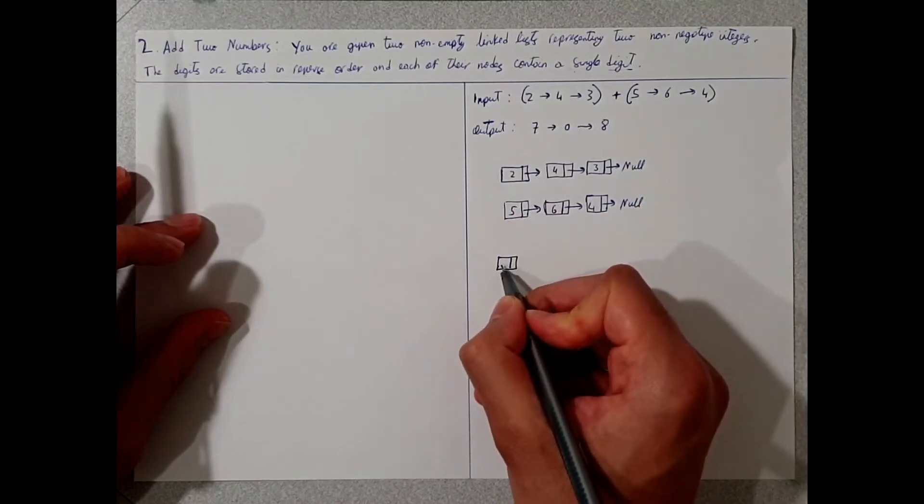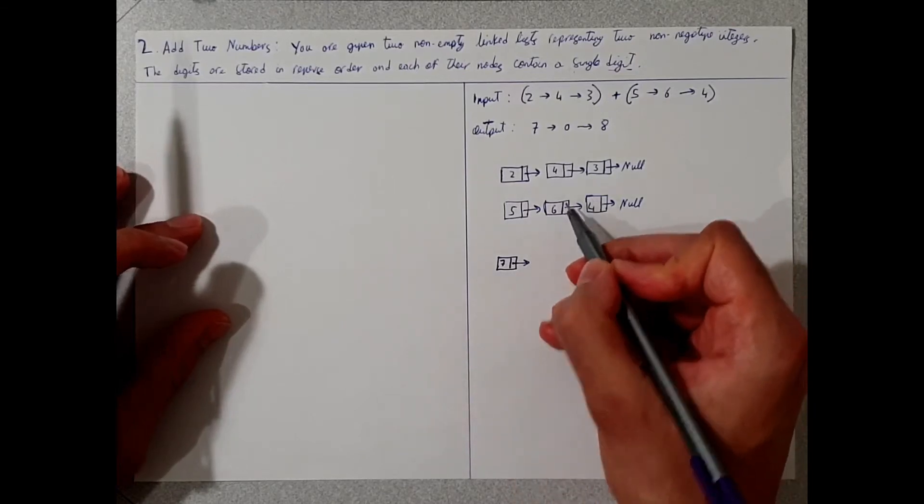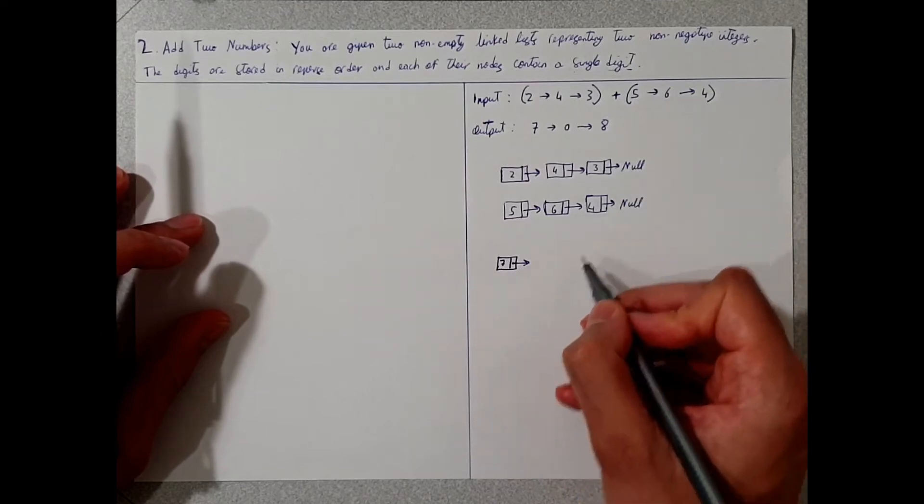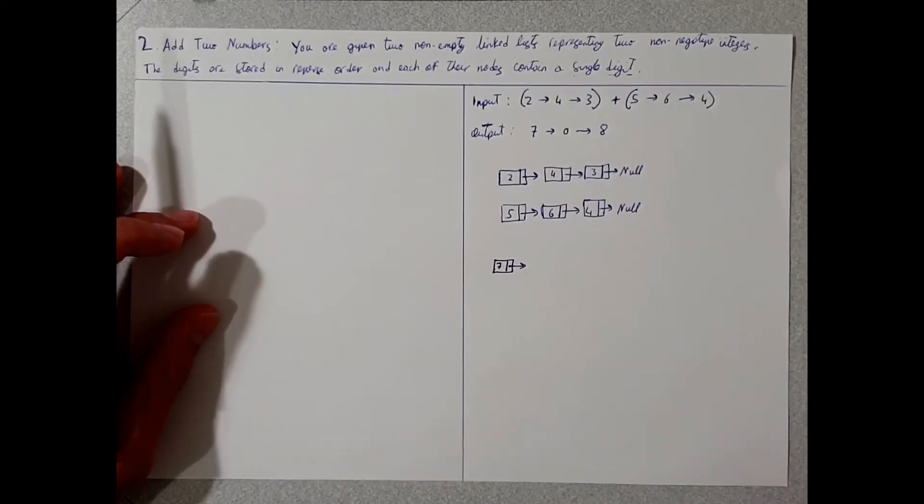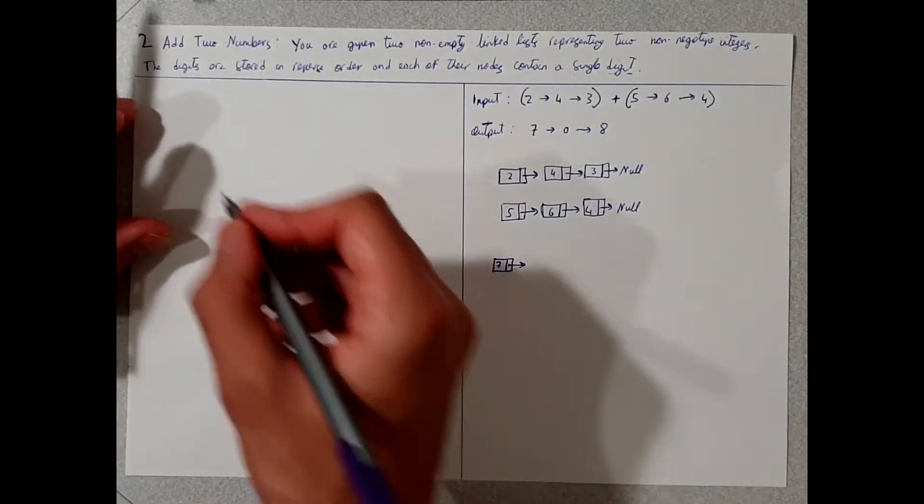a new list node that actually holds the numbers of addition. So 5 plus 2 will be, for example, 7 here. Then the next one will be 4 plus 6, it will hold 0, and then one will go to the next linked list and then we add the last numbers together. So let's write the code and I'll explain it as I go through.